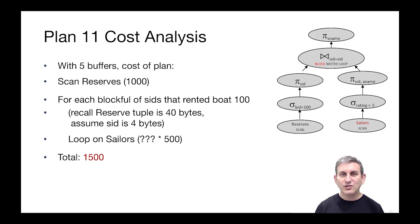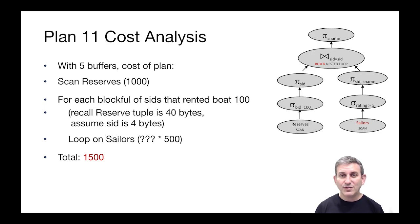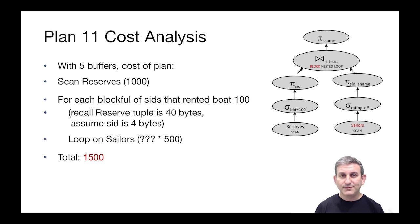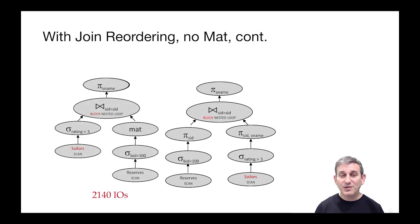The block nested loops join actually only needs one buffer in this case to make a single pass of sailors. That single pass is going to be five hundred IOs. So the total cost of this block nested loops join is fifteen hundred IOs, which is the cheapest plan we've seen so far.